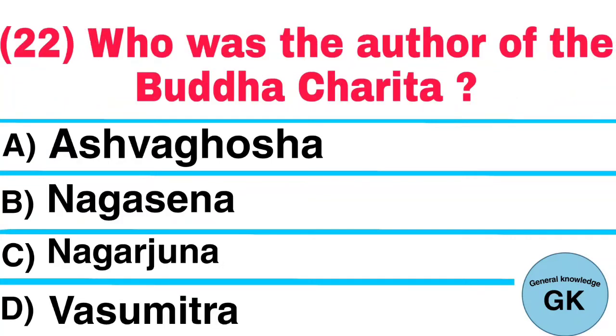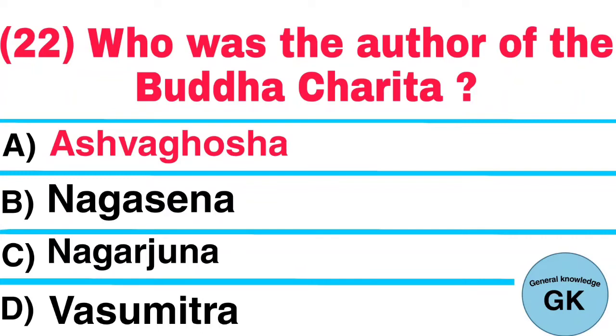Question number 22. Who was the author of the Buddhacharita? A. Ashwagosha, B. Nagasena, C. Nagarjuna, D. Vasumitra. Answer: Ashwagosha.